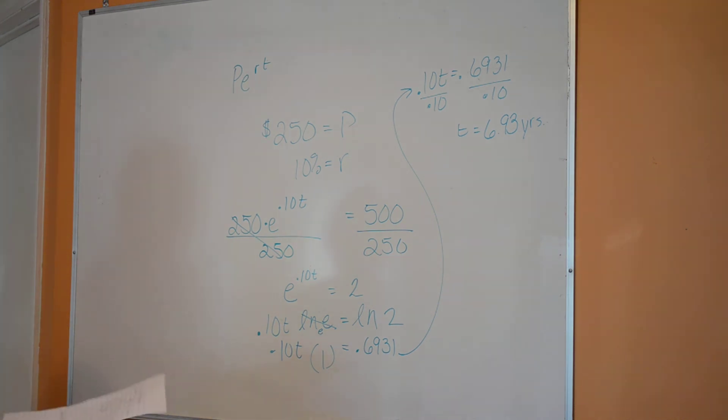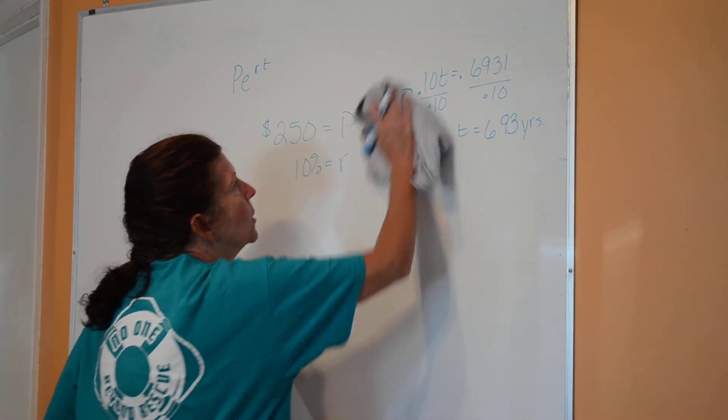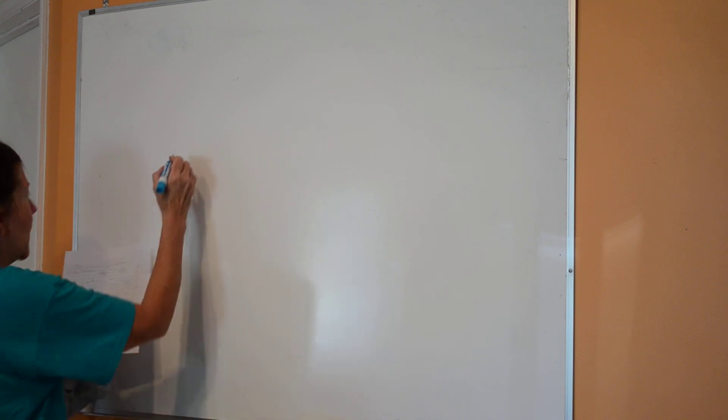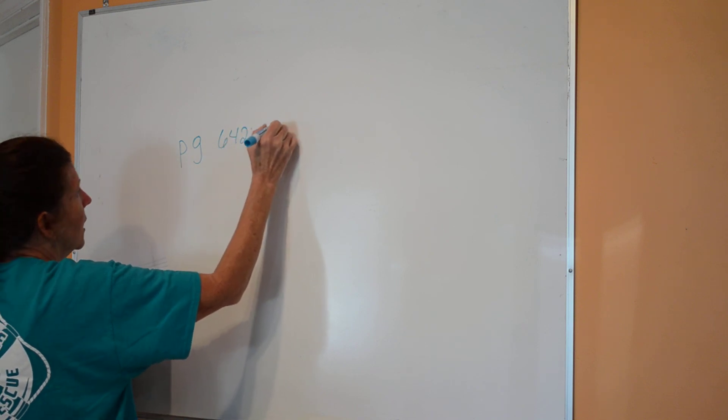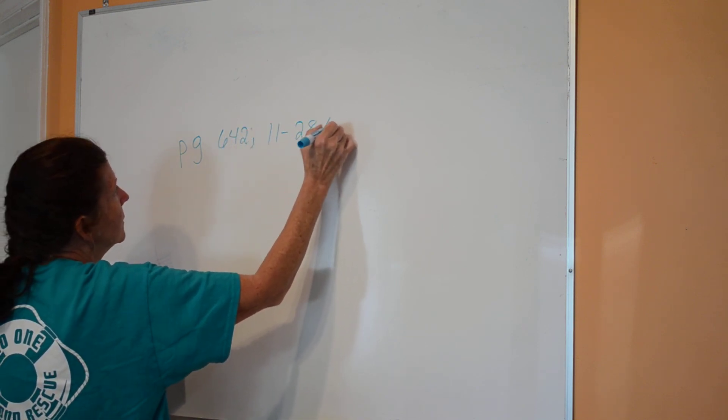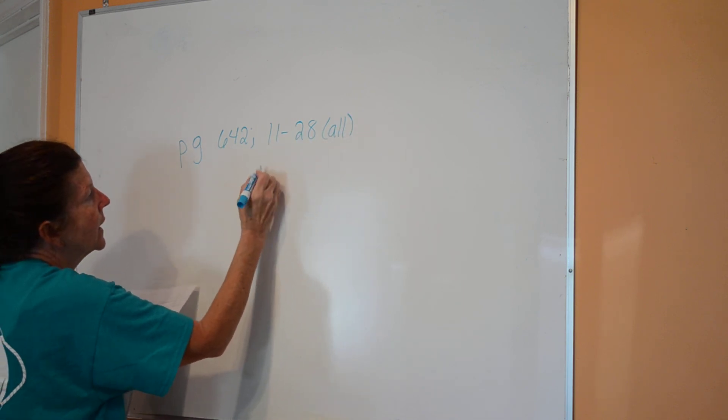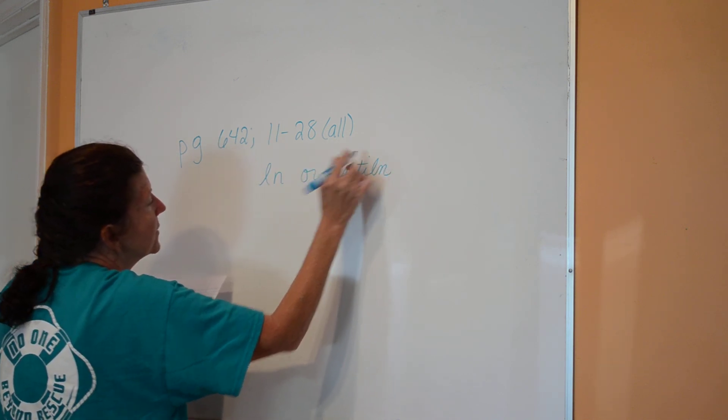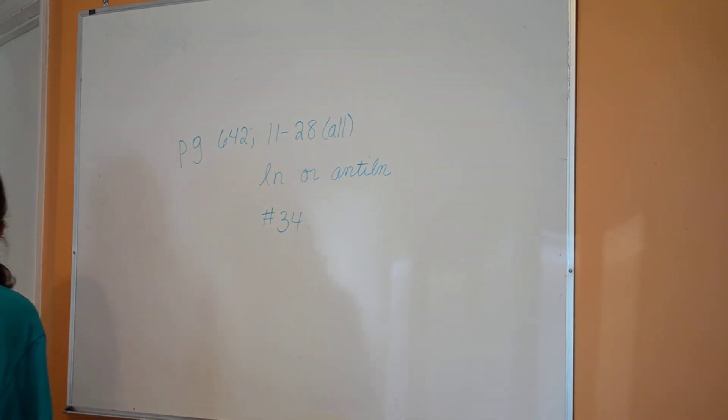You're going to have a few word problems, not much. Most of it is just calculator use. If you get stuck on those, you can text me and I can help you out on them or you can wait and I'll correct it and send it back to you after you've turned your homework in. I want you to do page 624, 11 through 28 all. That's mostly calculator use. Pay attention to whether it is the natural log or the anti-natural log. You're going to have some of both. And then I also want you to do number 34. That's the only word problem that you're going to have.